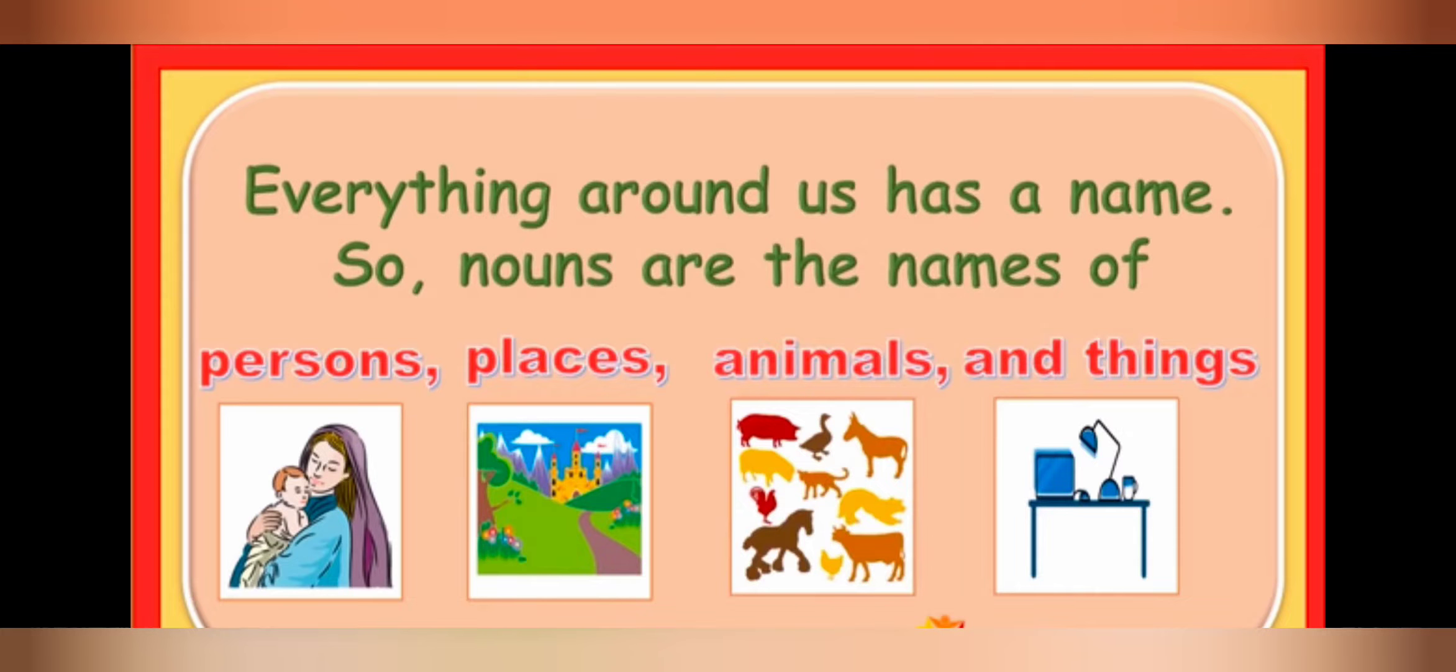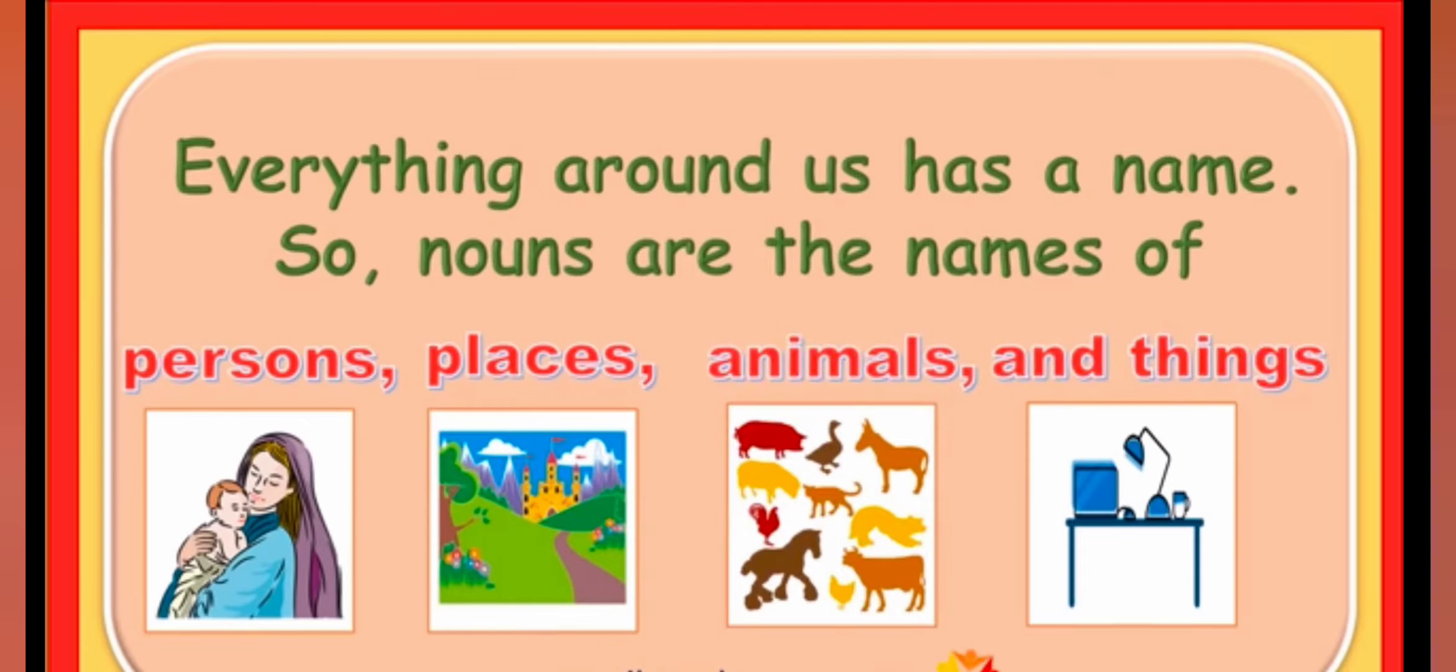And in animals, we have a number of animals on the screen. And in things, it comprises of computer, table, lamp and many other things.